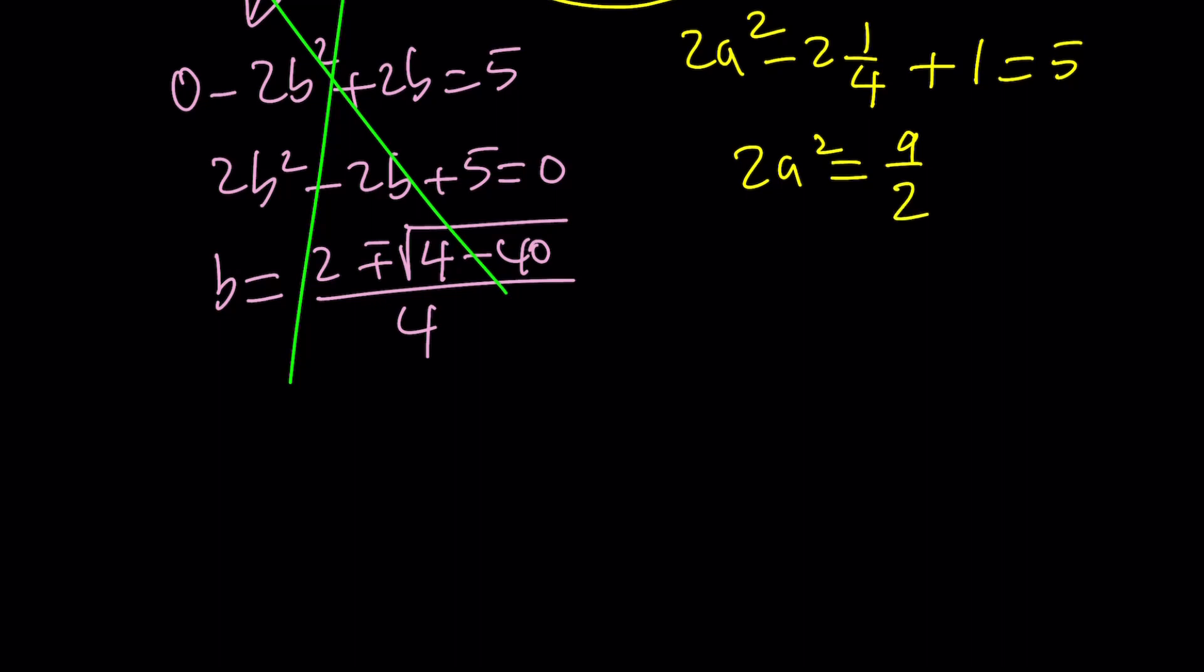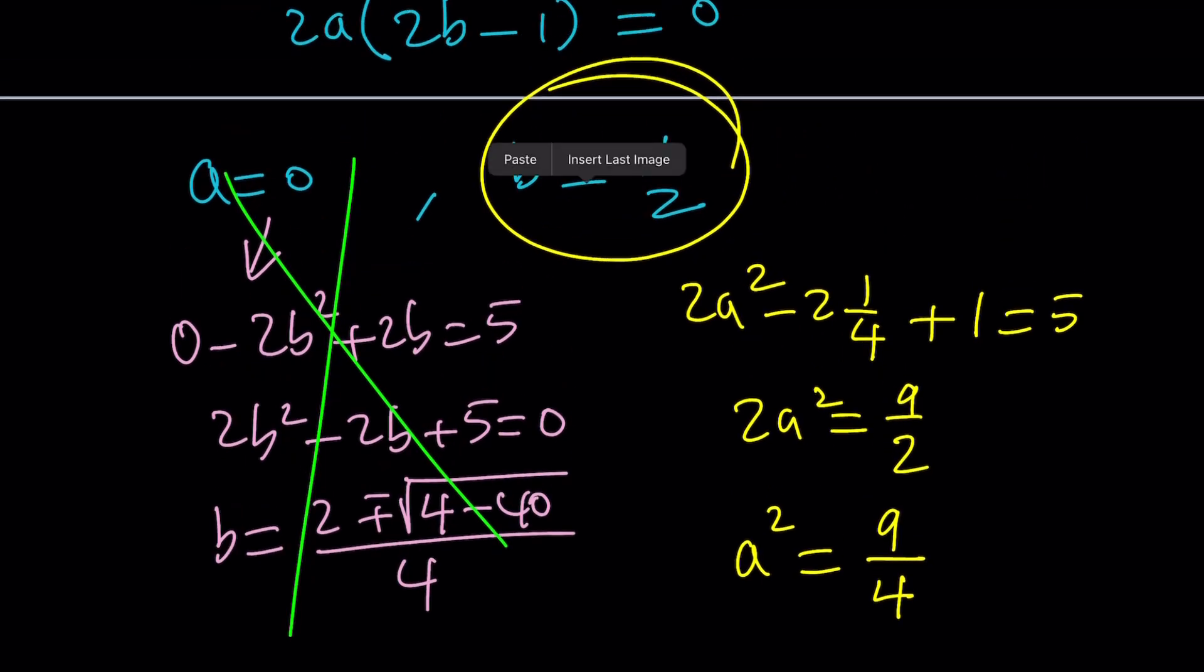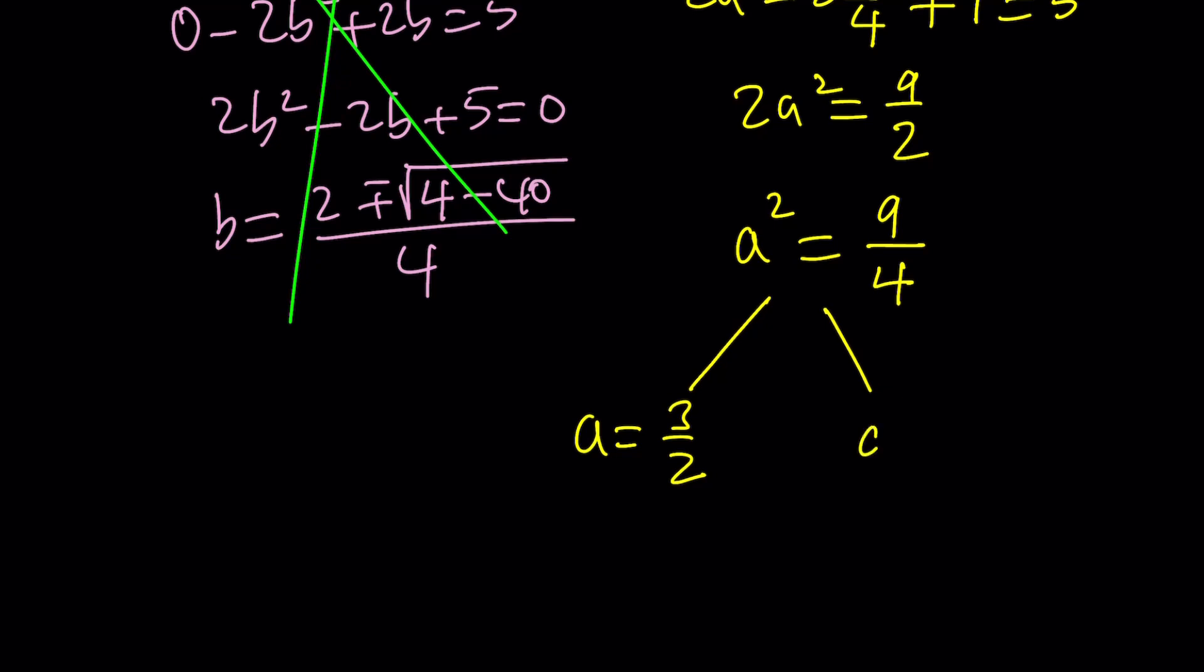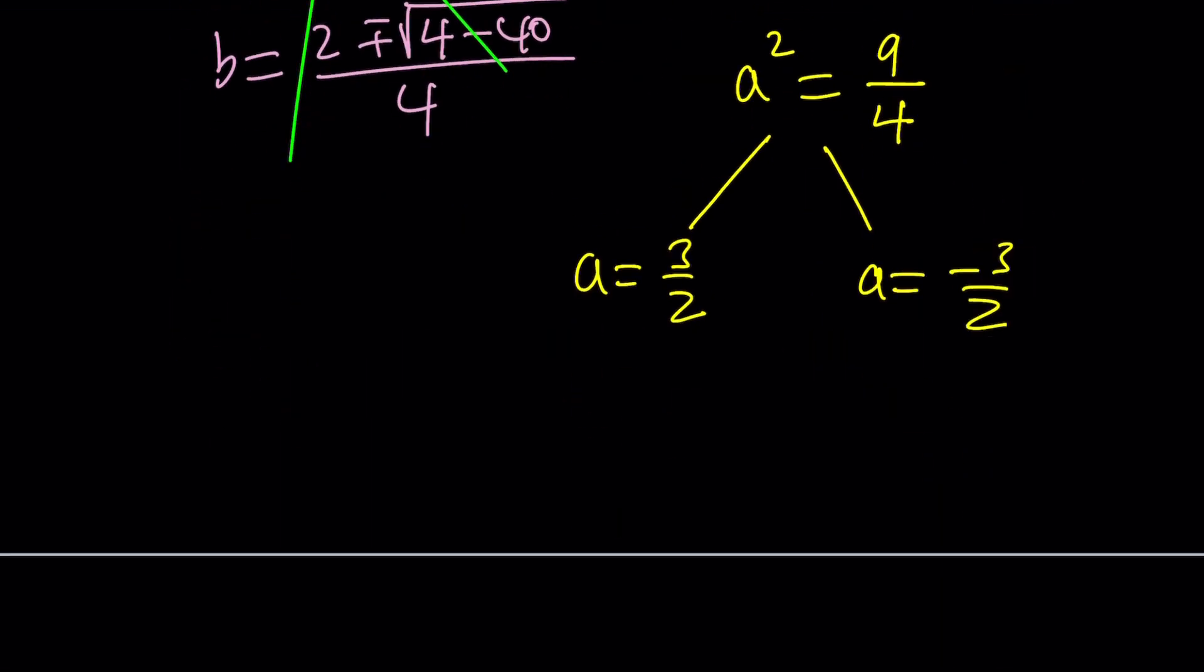And if you divide both sides by 2 or multiply by 1 half, you get a squared equals 9 over 4. And remember, b is equal to 1 half, so from here we get 2 solutions for a. a is either 3 halves or negative 3 halves. Along with b equals 1 half, this gives us the 2 solutions again.